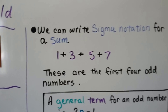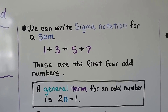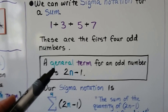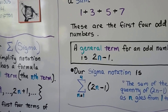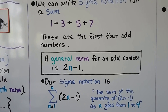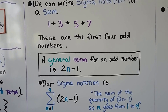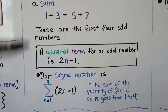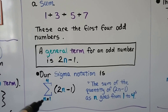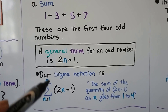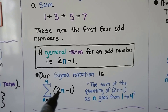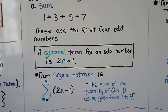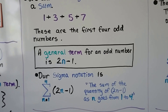We can write sigma notation for a sum. We have 1 plus 3 plus 5 plus 7 — these are the first four odd numbers. The general term, that nth term, for an odd number is 2n minus 1. So our sigma notation has our sigma, a 4 up here for the first four odd terms, n going from 1 to 4, and 2n minus 1. We read this as the sum of the quantity 2n minus 1 as n goes from 1 to 4.